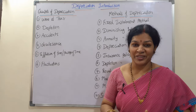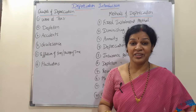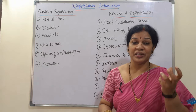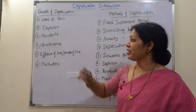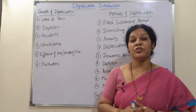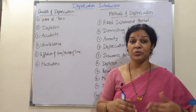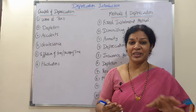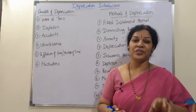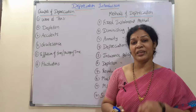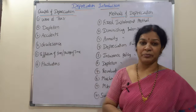Another cause is accidents. Due to accidents, whether it is a car, machinery, or furniture, the efficiency and value of the asset decreases — that is also considered depreciation. Another cause is obsolescence, which is due to technological changes. When new machines and new methodologies are invented, older assets become less efficient compared to the new ones.